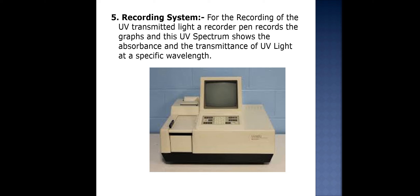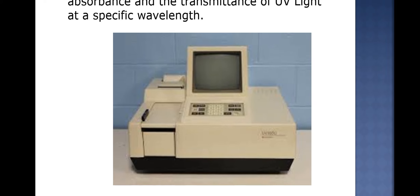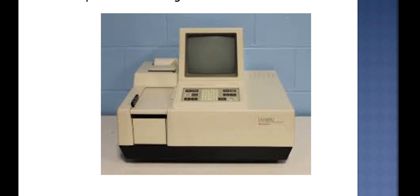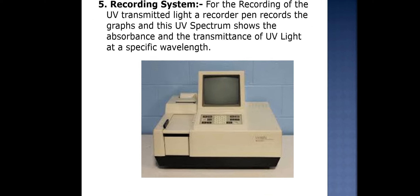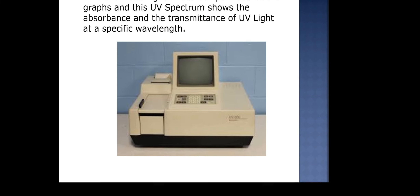The fifth instrument is the recording system. For recording UV transmitted light, a recorder pen records the graphs, and the UV spectrum shows the absorbance and transmittance of UV light at specific wavelengths. This is the general UV visible spectrophotometer, which is automatically connected to a computer. The model shown in the image has its own screen and displays the graph by itself.